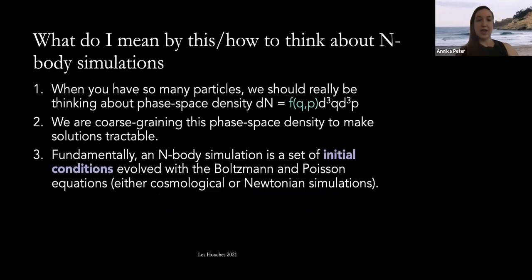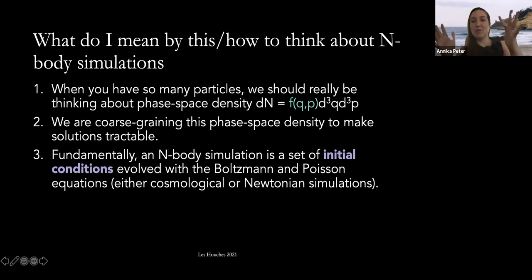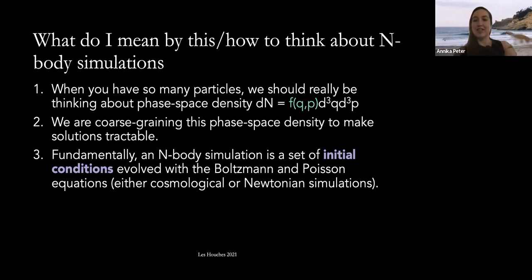This is where the leapfrog integrator comes in — we use it to evolve particle positions and velocities according to the gravitational force. This is the framework for how we start with a set of initial conditions for particles and then solve to some later time. We should think about dark matter particles described in terms of a distribution function, coarse-graining the phase space density, and we need a method to solve the Boltzmann-Poisson set of equations.